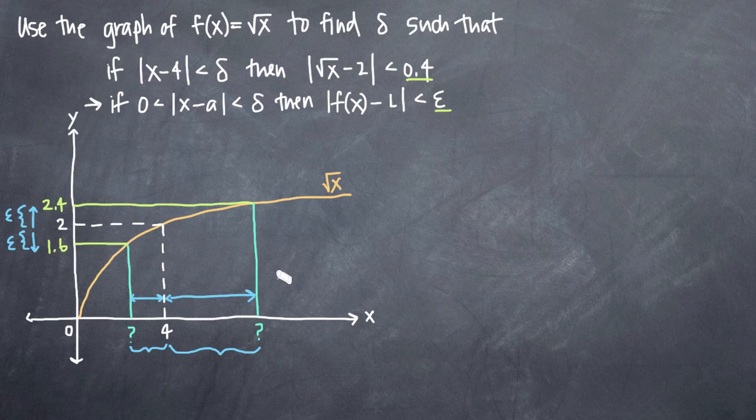So the problem is, if we were to define this second distance here as delta, if we said that this was equal to delta, then that means that we would be allowing ourselves to move an equivalent distance to the left away from 4. Let's maybe say that would be about like this, the same distance. And that would throw us way outside of our epsilon range.